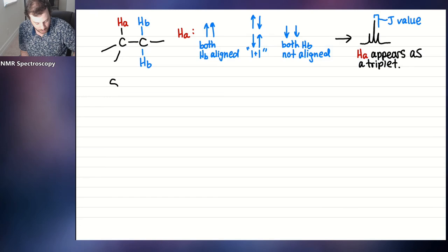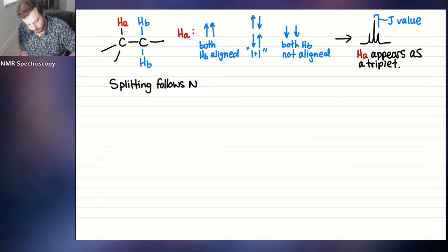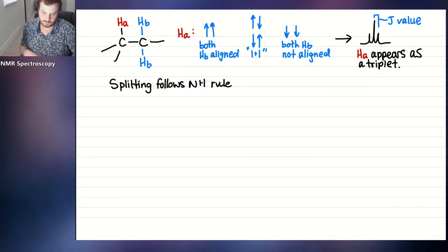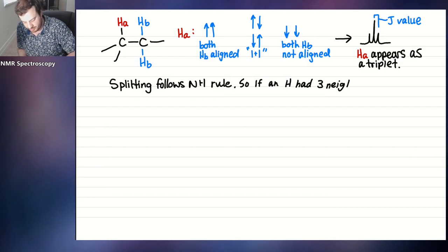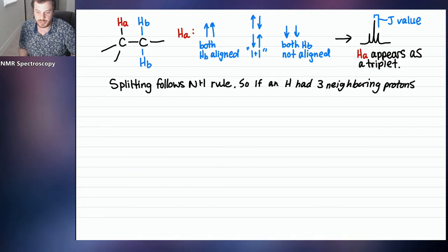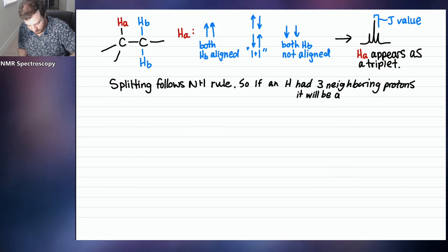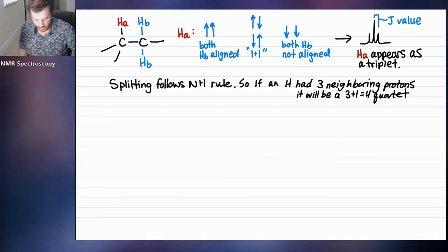Splitting follows the n plus one rule. If an H had three neighboring protons, it will be three plus one equals four — a quartet. The n is the number of neighbors, and n plus one tells you the splitting pattern.